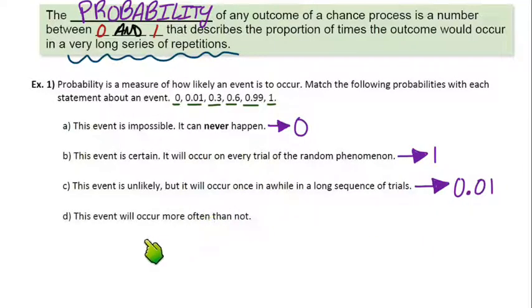And then Part D, this event will occur more often than not. So, it occurs more often than it does not. To me, that means like a majority, and I'm looking at 0.6. I suppose you could make an argument for 0.99 as well. That's a really strong, that would occur almost every time, actually, 0.99 would. So, I think this is really hinting at 0.6, like the majority of the time it happens. So, those are my four choices of the six to match with.